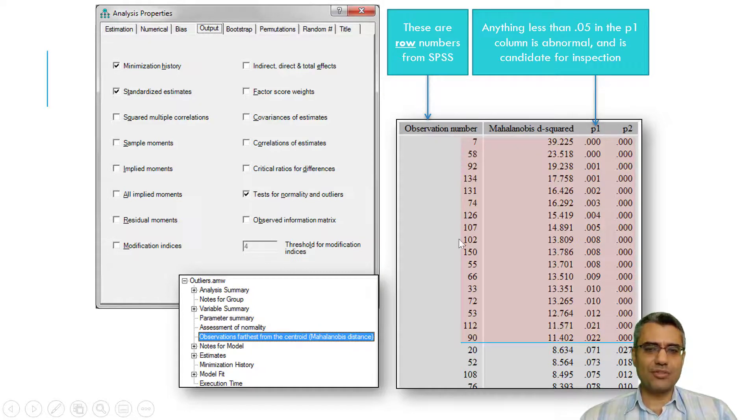These are the case numbers, for example, case number 7, 58, and later I will show you again in AMOS how to run this, but just for your information. So these are observations, the case numbers, case number 7, case number 58, and these are Mahalanobis D squared values. So higher means more deviates from the centroid. So we start with, if you want to remove, we start with those with the highest values.